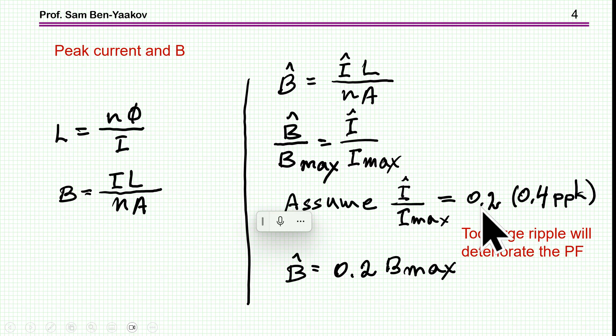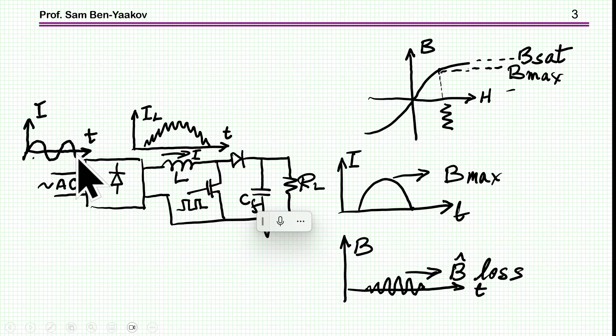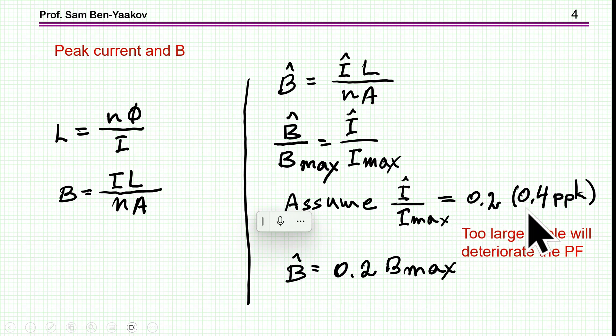Obviously, if we make it much smaller than that, the ripple will be low, but the inductor will be larger because the smaller the ripple current, the larger the inductor has to be. On the other hand, a large ripple may cause a corruption of the power factor. We are trying to get a good power factor, meaning we want this waveform to be close to sinusoidal as much as we can. If the ripple is too high, we might go into discontinuous mode in this region and this will corrupt the power factor. The assumption in this presentation is that the ripple of the current, the peak of the ripple, is 0.2 of B max.